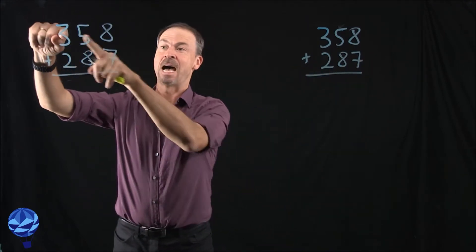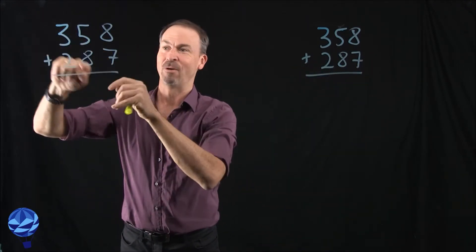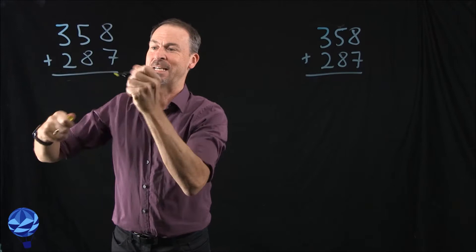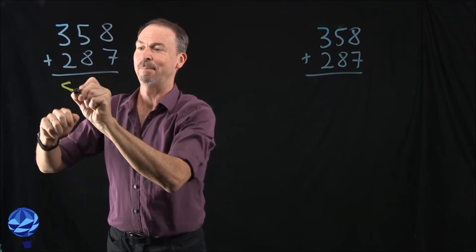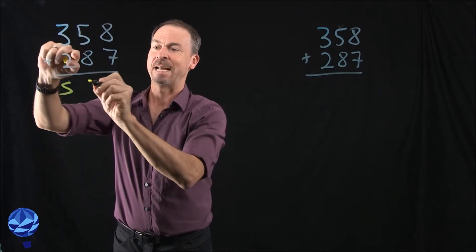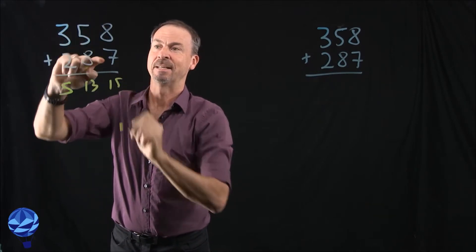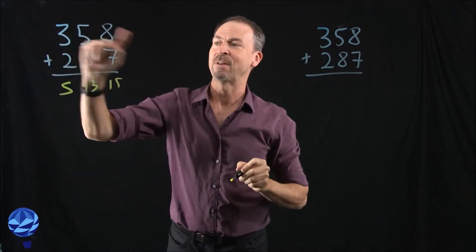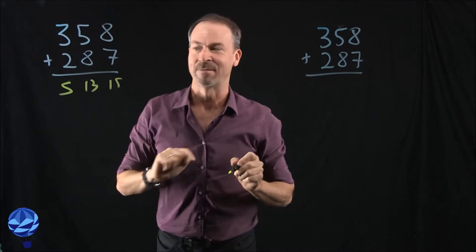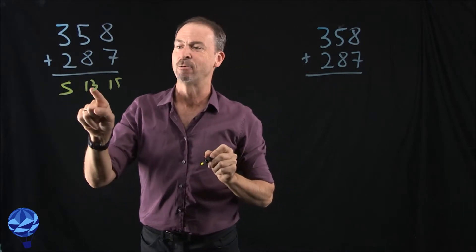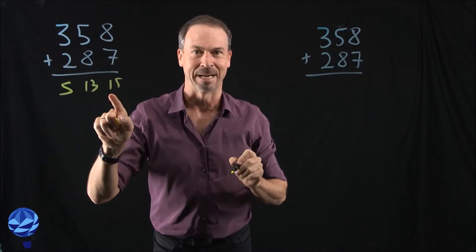First of all, my way. Let's go left to right. 3 plus 2 is 5 in this example. 5 plus 8 is 13. 8 plus 7 is 15. So in my example of 358 plus 287, I'm getting 5, 13, 15.